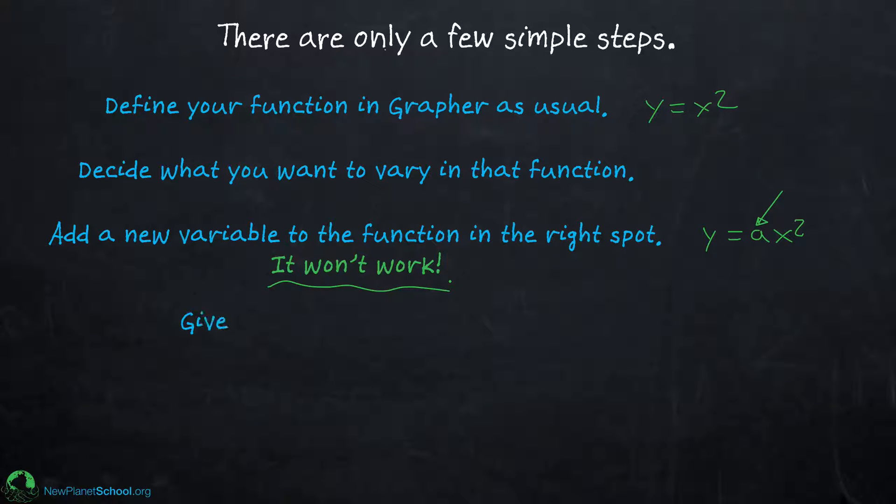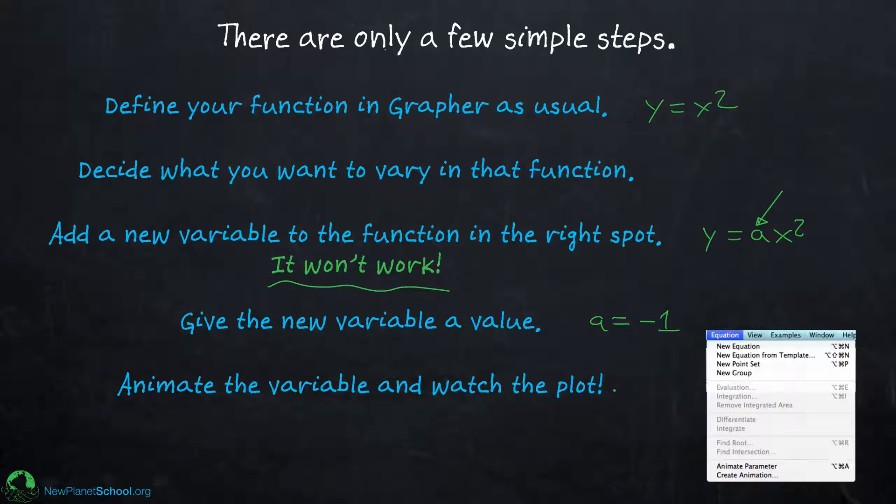The next thing you're going to want to do is give the new variable a value. So you'll say a equals minus one. It doesn't matter, give it any value. And again, MacGrapher won't really know what you're trying to do yet until you finally click on that parameter and tell it to animate it. You'll do that by going into the equation menu and clicking on animate parameter right down here. So that's the basic idea.